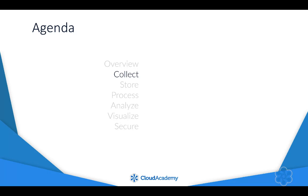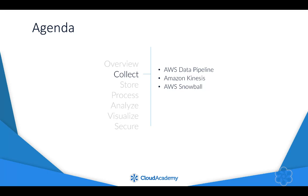In this Big Data on AWS learning path we cover many AWS Big Data services that can be used to collect, store, process, analyze, visualize, and secure Big Data. In this course we provide three modules which cover the Big Data collection services of AWS Data Pipeline, Amazon Kinesis, and AWS Snowball.